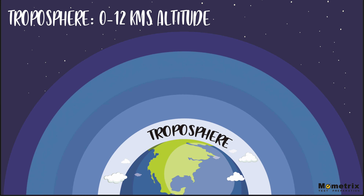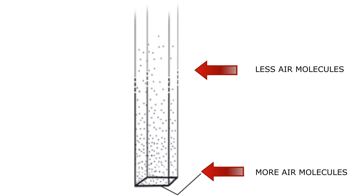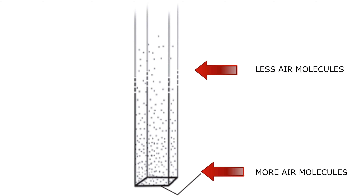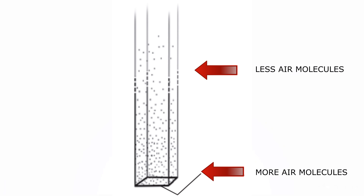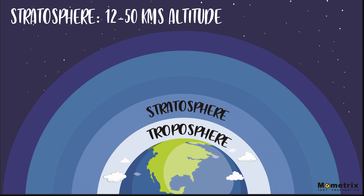As we ascend through this layer, the temperature decreases. It explains why everything is frozen at the summits of high mountains like Mount Everest, which has an altitude of almost 9 kilometers. The temperature decreases to as low as negative 60 degrees Celsius at the very top of this layer. Furthermore, air molecules have weight, and most of the gases concentrate in the lower layer due to gravity. 80% of the gases of the atmosphere are concentrated in just this layer, while the remaining 20% are distributed among the rest of the upper layers.